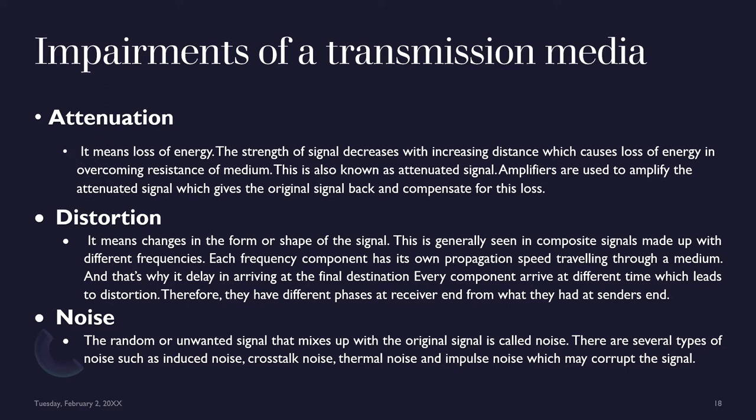Every component arrives at a different time, which leads to distortion. Therefore, components have different phases at the receiver end compared to what they had at the sender's end. Noise is the random or unwanted signal that mixes with the original signal. There are several types of noise, including induced noise, crosstalk noise, thermal noise, and impulse noise, which may corrupt the signal.